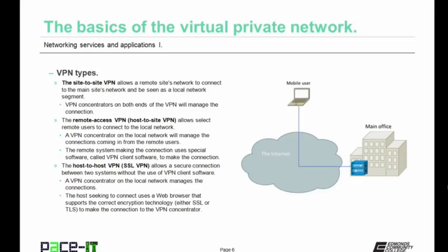The third type of VPN is the host-to-host VPN, often called an SSL VPN. It allows a secure connection between two systems without the use of VPN client software. A VPN concentrator on the local network manages the connection. The host seeking to connect uses a web browser that supports the correct encryption technology — either SSL or more likely TLS — to make the connection to the VPN concentrator.